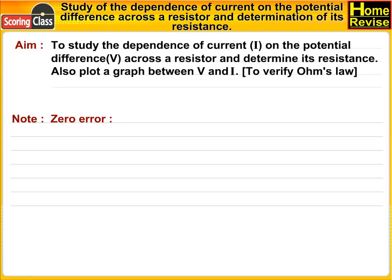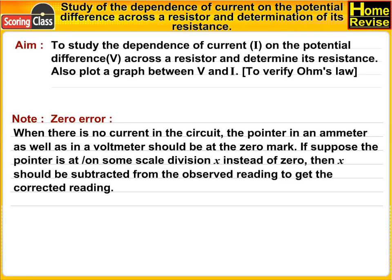Note: Zero error. When there is no current in the circuit, the pointer in an ammeter as well as in a voltmeter should be at the zero mark. If suppose the pointer is at or on some scale division x instead of zero, then x should be subtracted from the observed readings to get the corrected reading.